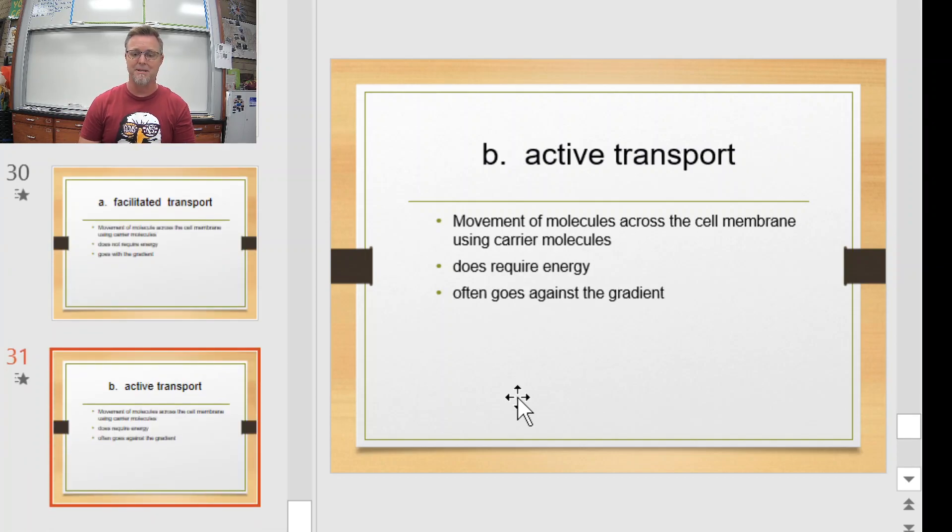Active transport's the opposite. This is the movement of molecules across the membrane using carrier molecules. It does require energy, and it often goes against the gradient. So what does it mean to go against the gradient? Well, I've got a lot of molecules here. I've got very little here. Normal with the gradient means molecules from this hand go here, downhill. Well, active transport, opposite. Molecules from this hand are going to go uphill. That takes work. That takes energy. That's what it means to go against the concentration gradient.